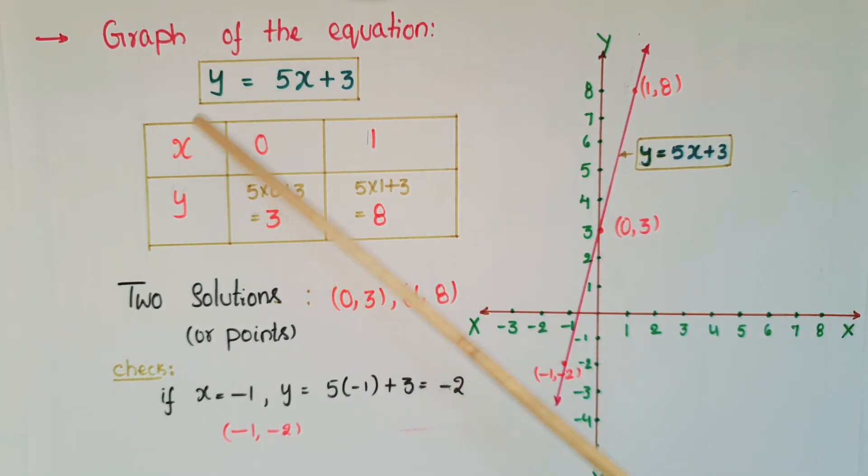If x is equal to 0 then y is equal to 5 into 0 plus 3, that is 3. If x is equal to 1 then y is equal to 5 into 1 plus 3, that is 8. So the two solutions or two coordinates here are 0 comma 3 and 1 comma 8.